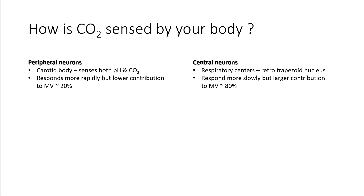CO2 is sensed by both peripheral neurons and central neurons. The peripheral neurons are present in the carotid body and sense both pH and carbon dioxide. The response is much more rapid because the carotid body is in continuous contact with the bloodstream. The central neurons, on the other hand, are much slower to respond, but they contribute more to the minute ventilation.